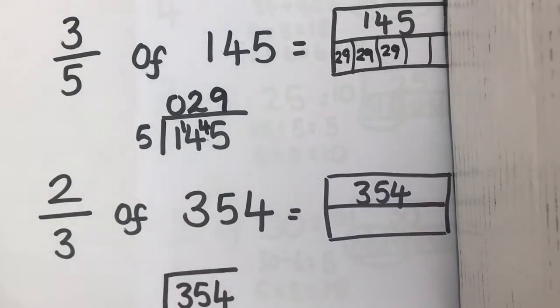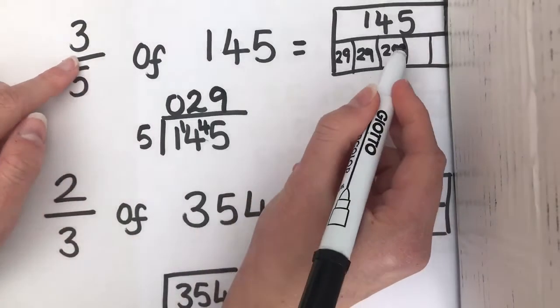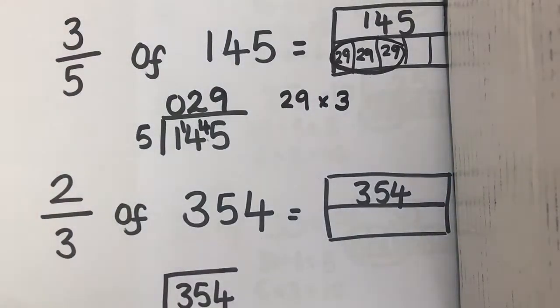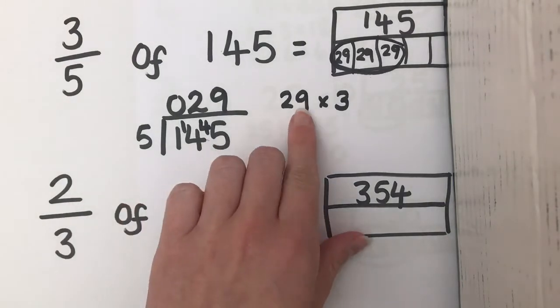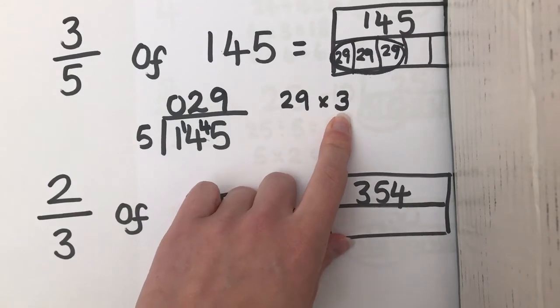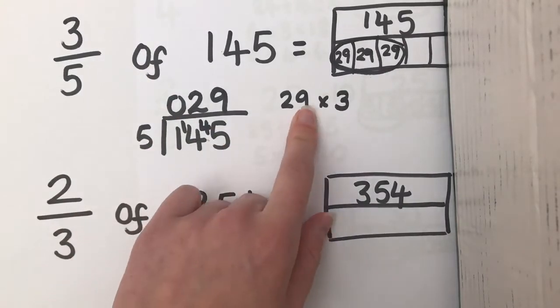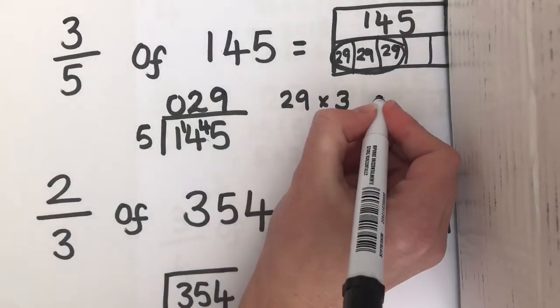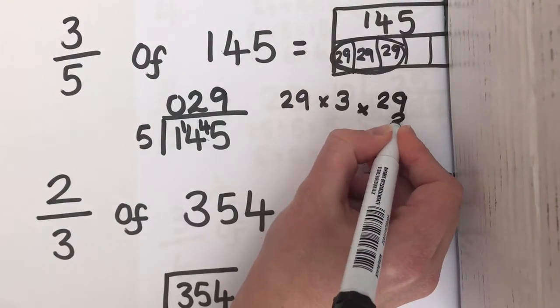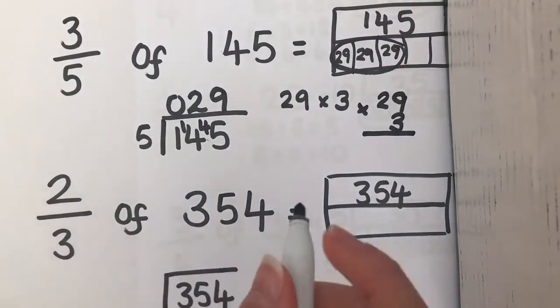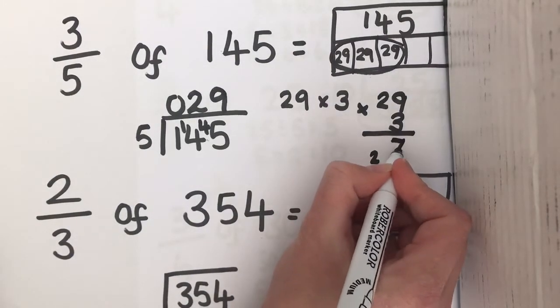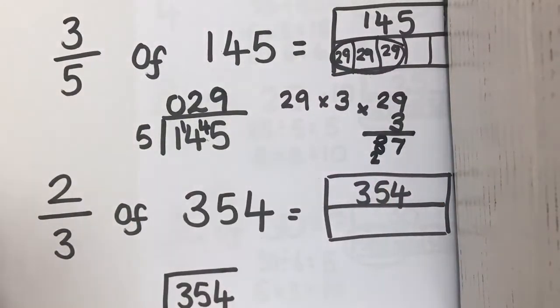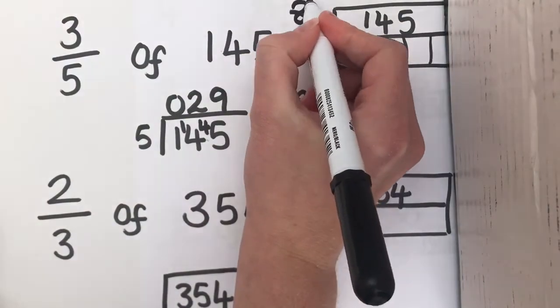Okay? I'm only going to fill that many in because that's the amount that we need. So, we want 3 fifths. We're now looking at 29 times 3. Now, there's a couple of ways that you could do this. You could multiply 30 by 3 and then take 3 off. Or you could use the short multiplication method. Either it's fine. To show you, I'm going to do the short multiplication method. But I would imagine most of you should be able to do this in your head. So, 9 times 3, 27. 3 times 2 is 6. Add on 2 more is 8. So, 3 fifths of 145 is 87.